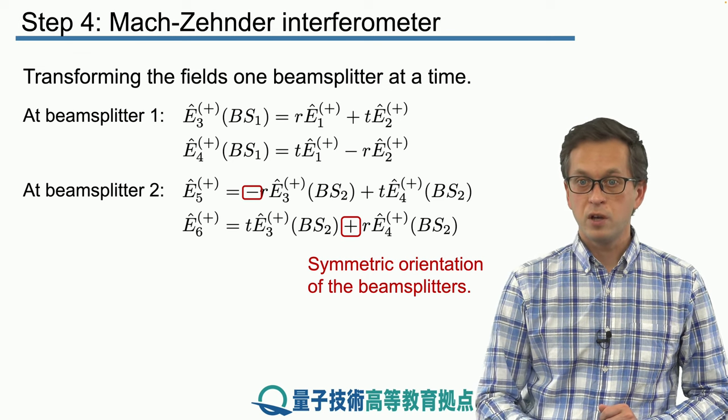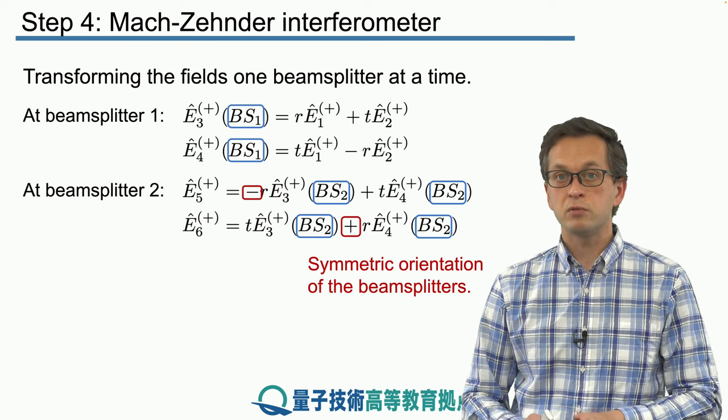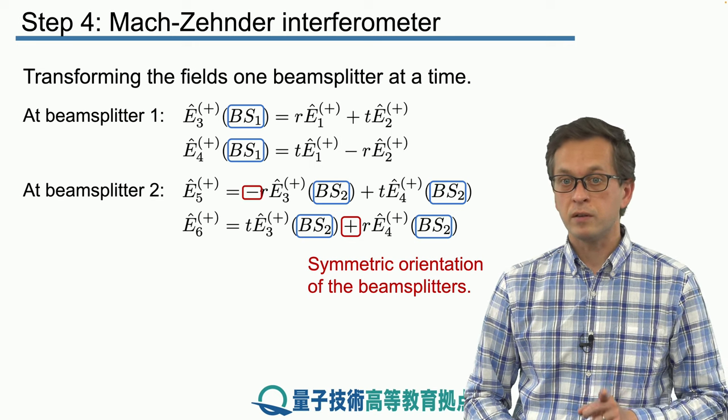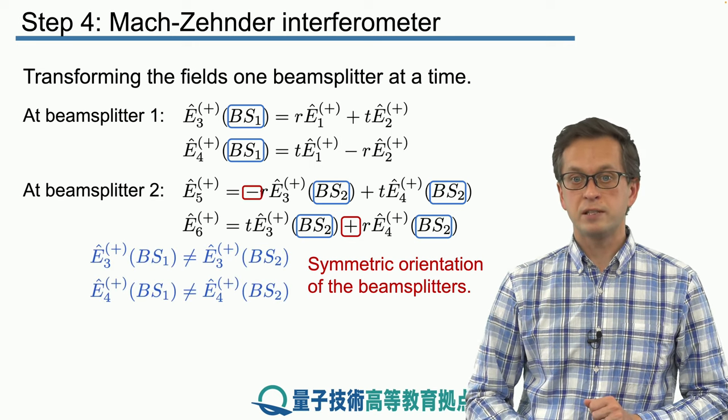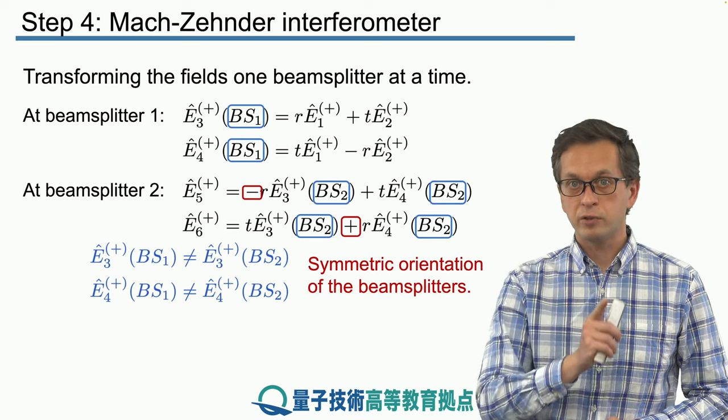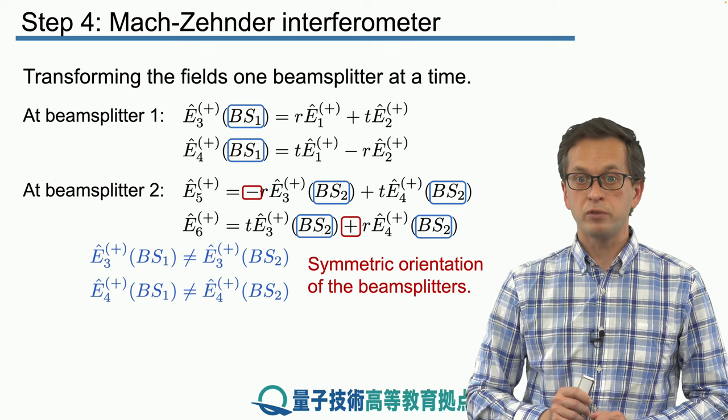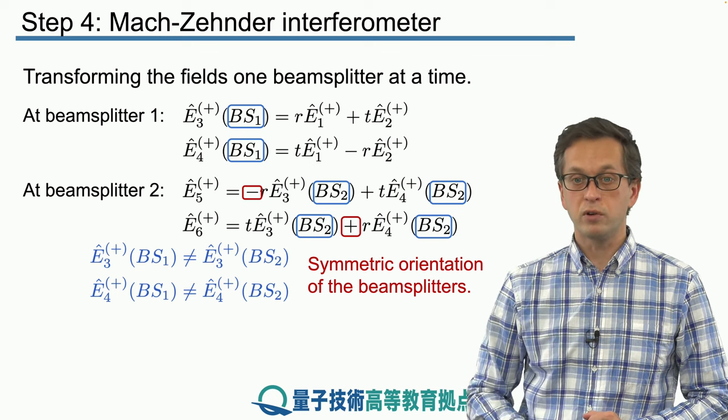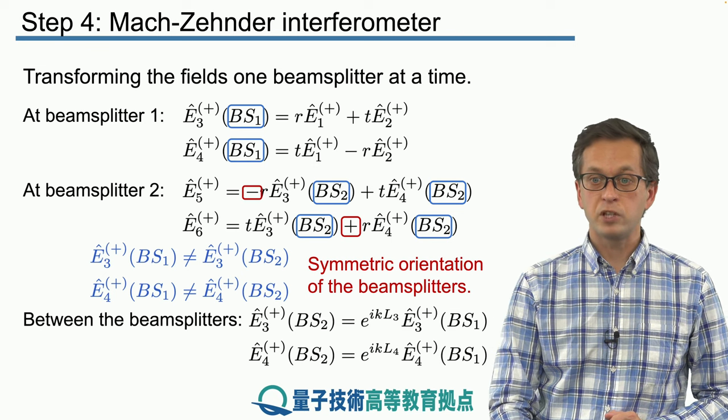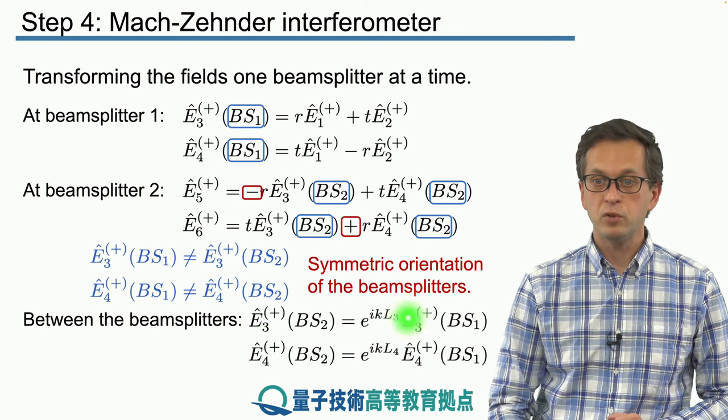And also, we are tracking the field E3 at beam splitter 1 and beam splitter 2 separately. Why is that? That's because the field operators are not the same at beam splitter 1 and beam splitter 2. Remember, the light, the photon has to travel length L3 for mode 3 and L4 for mode 4.